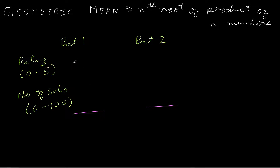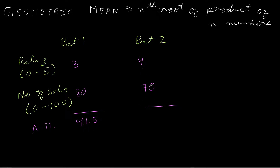Bat one has a rating of 3 and bat two has a rating of 4, whereas bat one makes 80 sales and bat two makes 70 sales. If we only knew arithmetic mean, we would average these numbers: for bat one it's (3 + 80) / 2 = 41.5, and for bat two it's (4 + 70) / 2 = 37. So using arithmetic mean, we would choose bat one since its mean is higher.